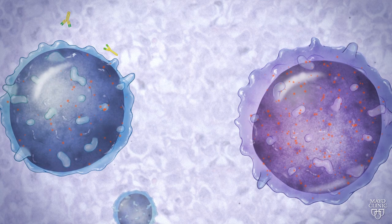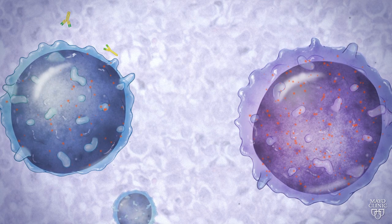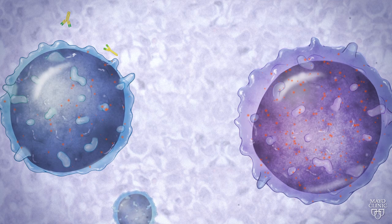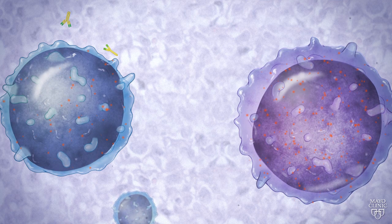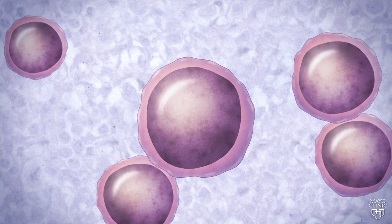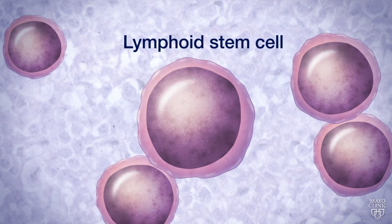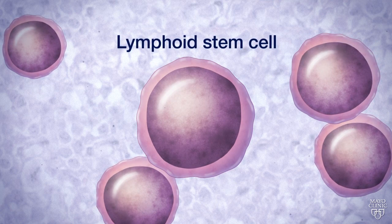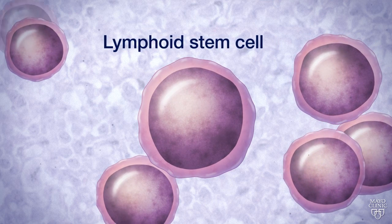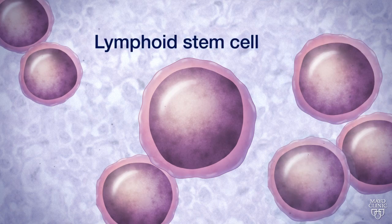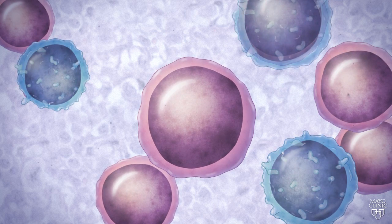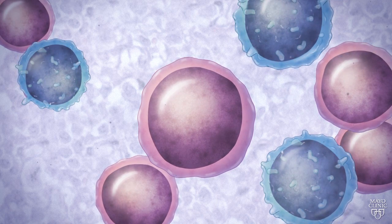Because CD20 is found on the surface of mature, normal, and malignant B-cells, both will be targeted. Without the CD20 receptor, immature lymphoid stem cells will not be targeted and will replace the number of destroyed normal B-cells with healthy cells.